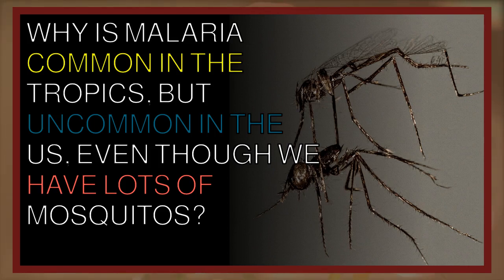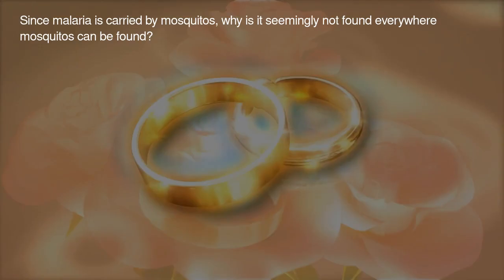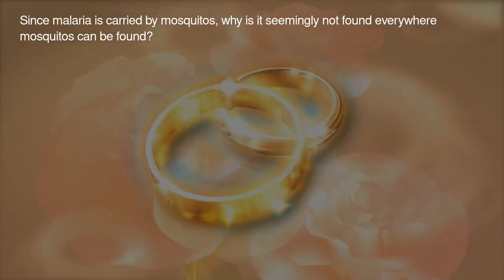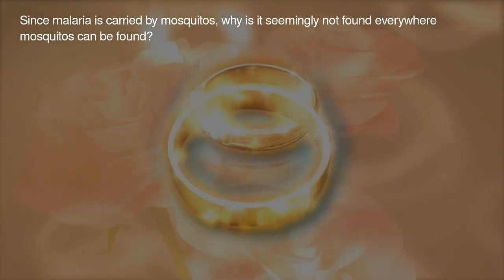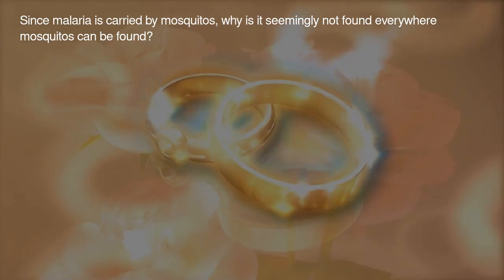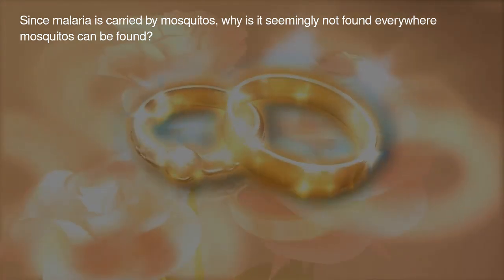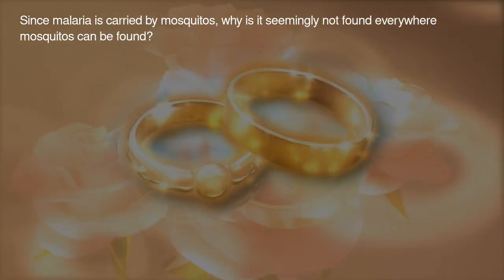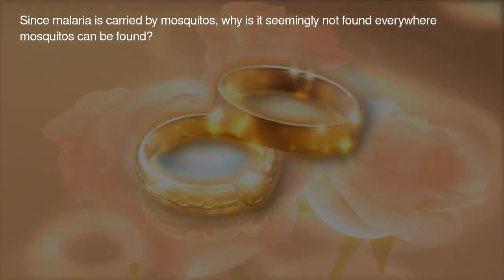Why is malaria common in the tropics but uncommon in the U.S., even though we have lots of mosquitoes? Since malaria is carried by mosquitoes, why is it seemingly not found everywhere mosquitoes can be found?